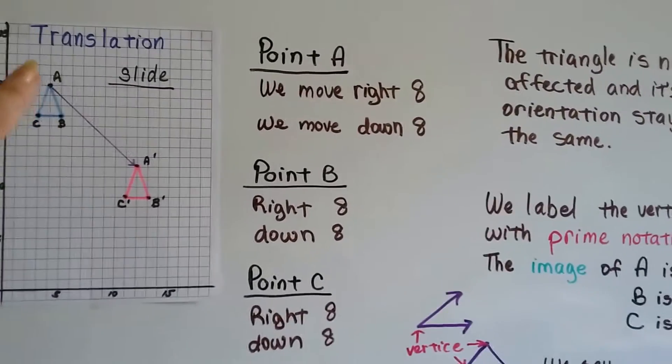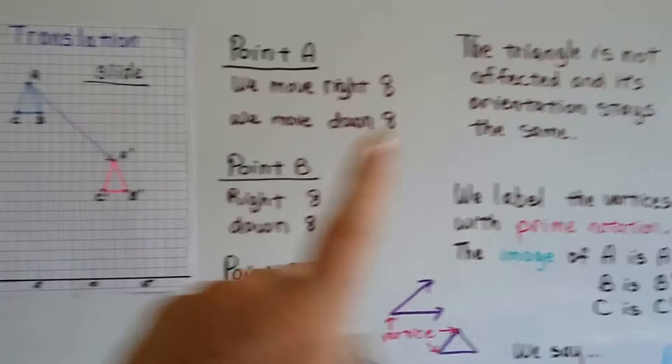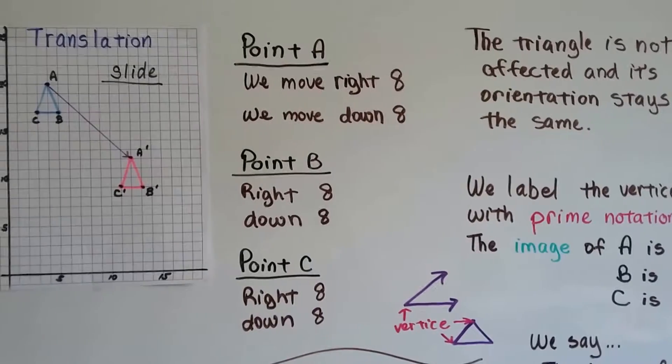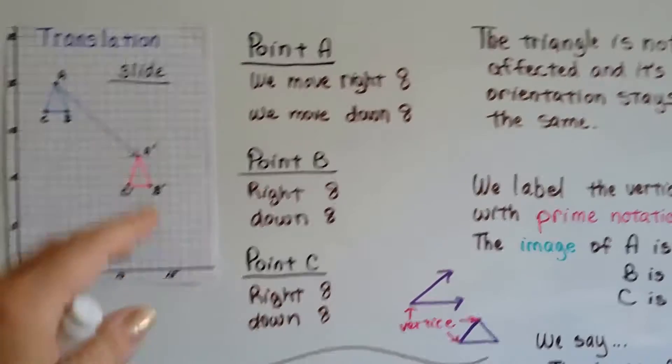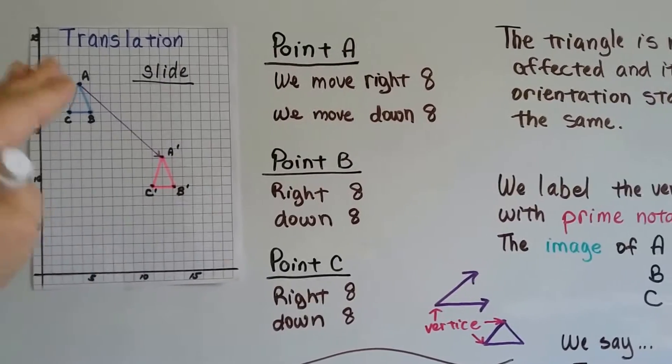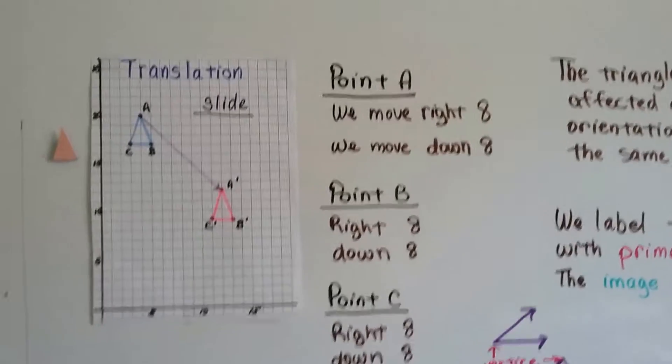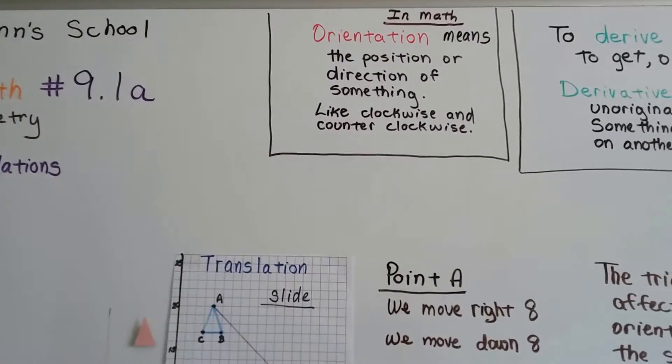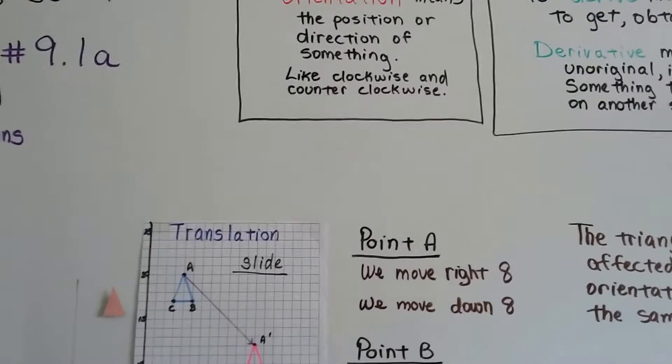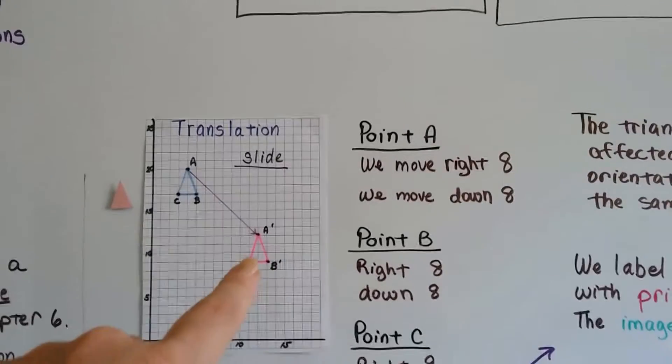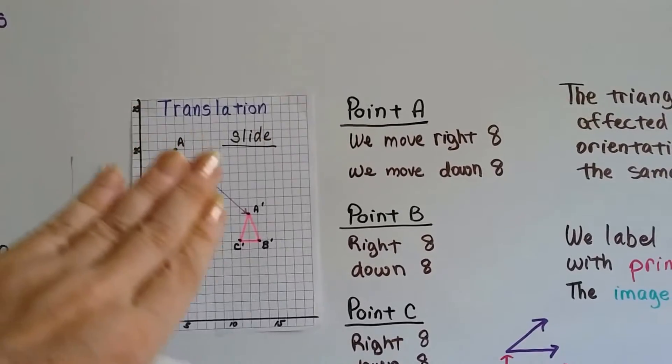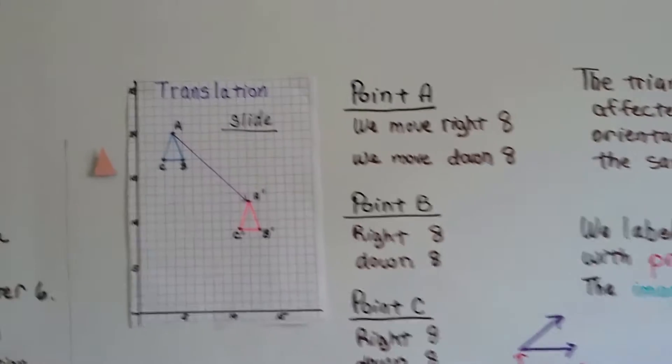So it slid along that line. The triangle is not affected, and its orientation stays the same. We didn't flip it around. We didn't put it upside down. We didn't turn it counterclockwise or clockwise. Its orientation stayed the same. Now, in math, orientation means the position or direction of something, like clockwise or counterclockwise. So it did not change at all. It just slid like it was on ice.